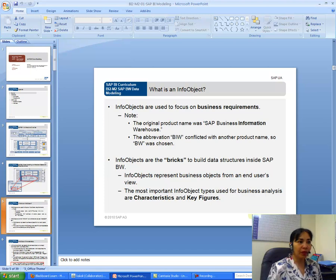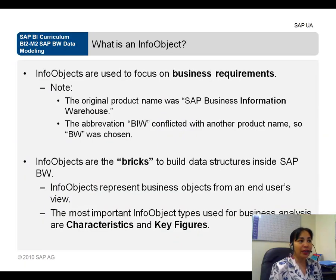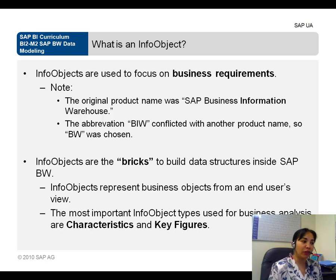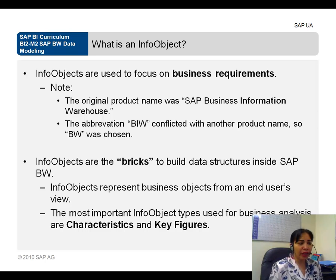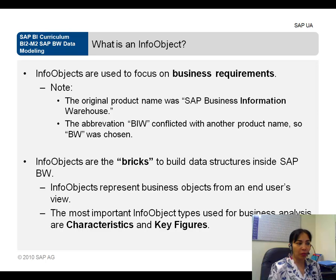An info object is used to focus on business requirements. You can think of info objects as the bricks used to build data structures inside SAP Business Information Warehouse. Info objects represent business objects from an end user's view — objects are anything about which you store data. There are two types of info objects: characteristics and key figures.